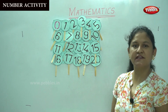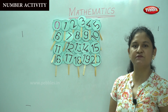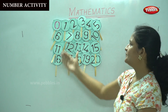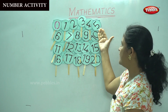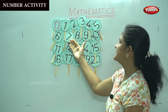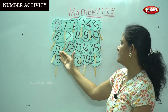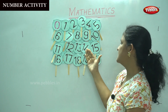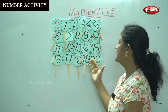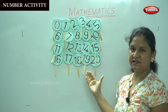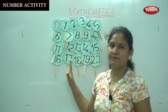Have we placed all the numbers in their place? So we are going to tell the numbers from 0 to 20: 0, 1, 2, 3, 4, 5, 6, 7, 8, 9, 10, 11, 12, 13, 14, 15, 16, 17, 18, 19, 20. So we have all the numbers placed on the number chart.